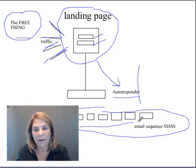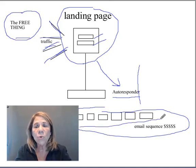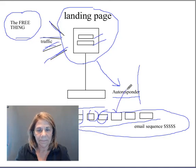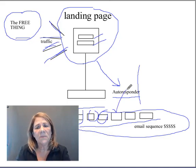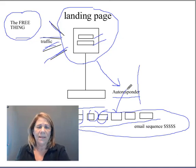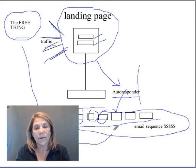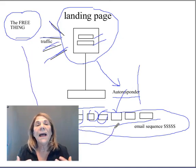Through your autoresponder sequence you're warming them up, getting them to know you. Every once in a while you offer something, and they get to know you. They're opening your emails and eventually they say, 'You know what, I really like this person — I'm going to try that shake she was talking about.' It takes longer to get there, but that's how it works.